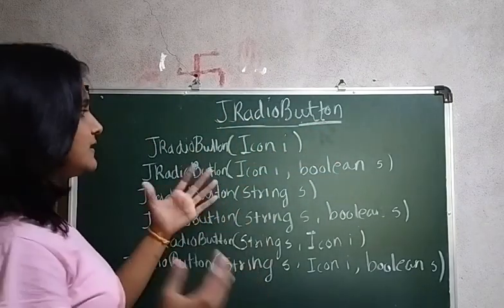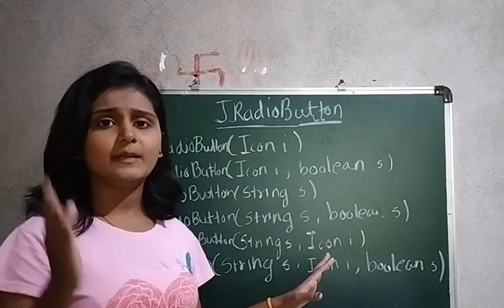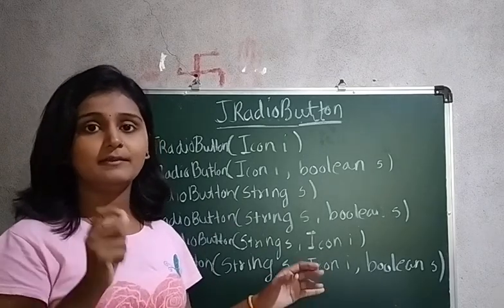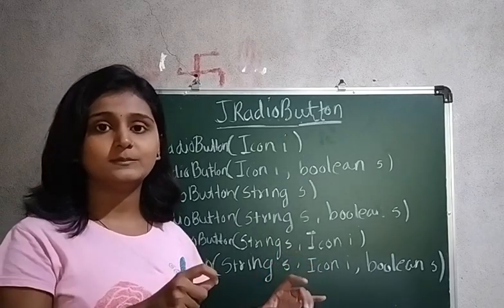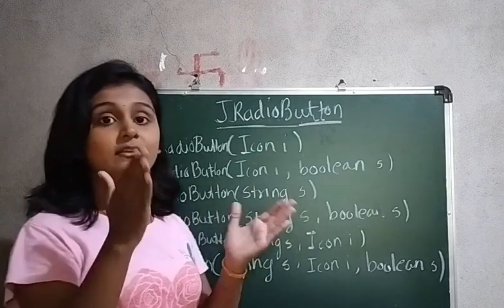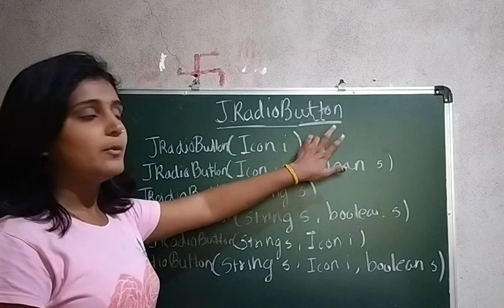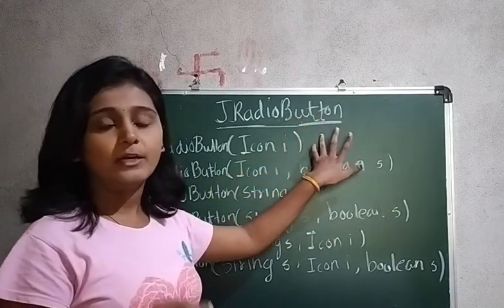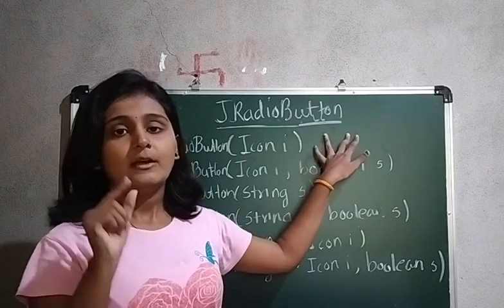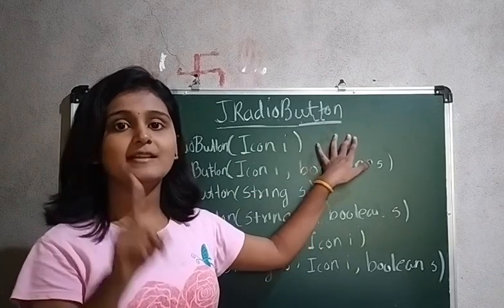In AWT we have seen that it does not support a dedicated radio button component — we had to use CheckboxGroup objects combined with Checkbox to create radio button behavior. But here in Swing, the JRadioButton component is provided. Whenever you click one button, the other will be deselected, meaning only a single choice can be made.